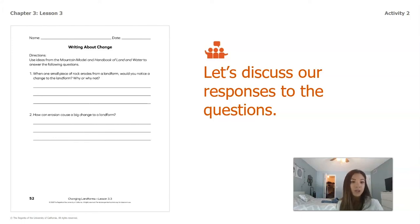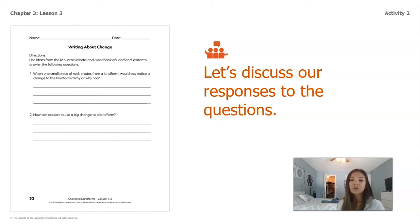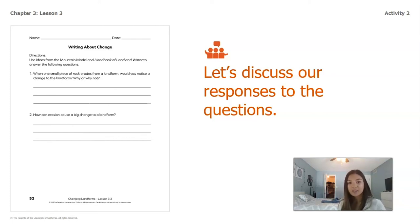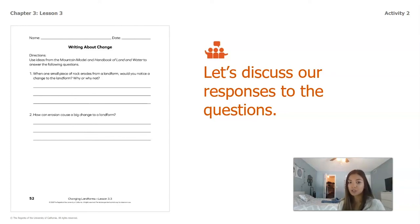Question two: how can erosion cause a big change to a landform? Over time, smaller changes are going to add up to a bigger, more noticeable change. With the mountain model, when we took one or two cotton balls off we didn't notice it, but if we took 20 or 30 cotton balls off the plate it would be a much more noticeable change. Thinking back to our beach example, a few pieces of sand washing onto the shore wouldn't be noticed, but over time as more sand deposits onto the shore, it's going to make the shore smaller — a change we'll actually be able to notice.